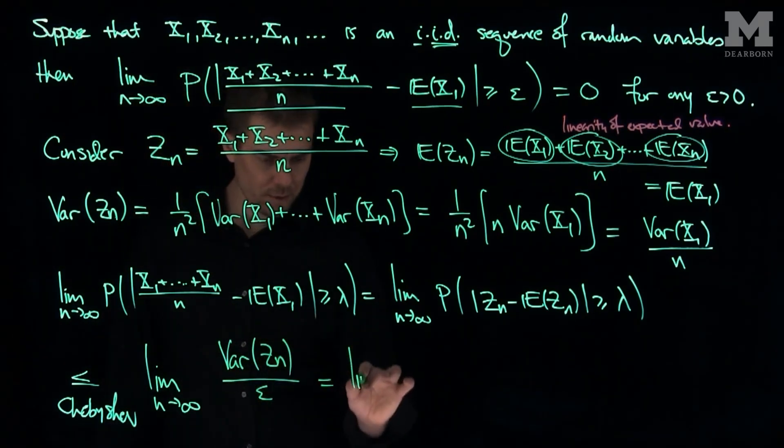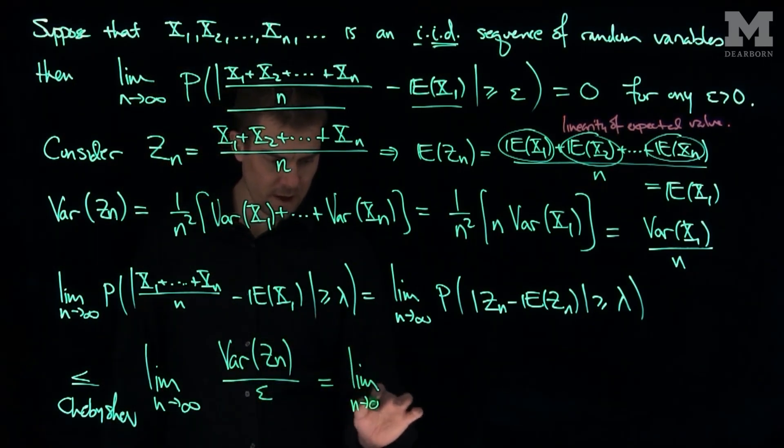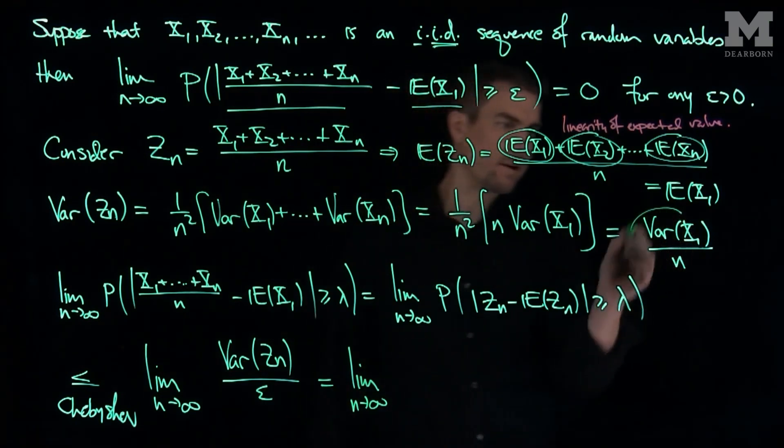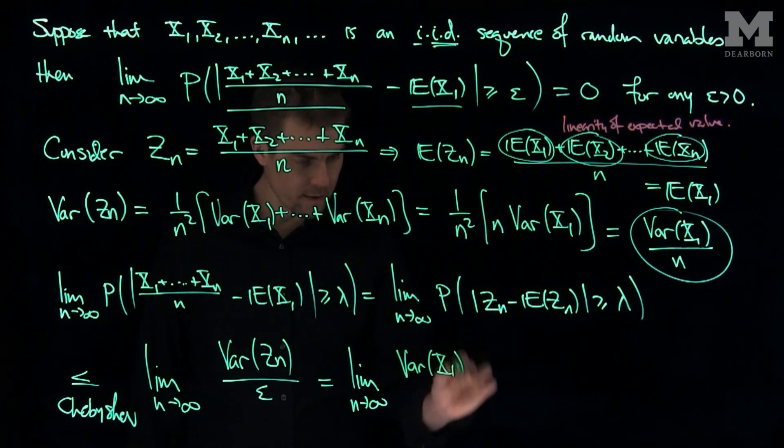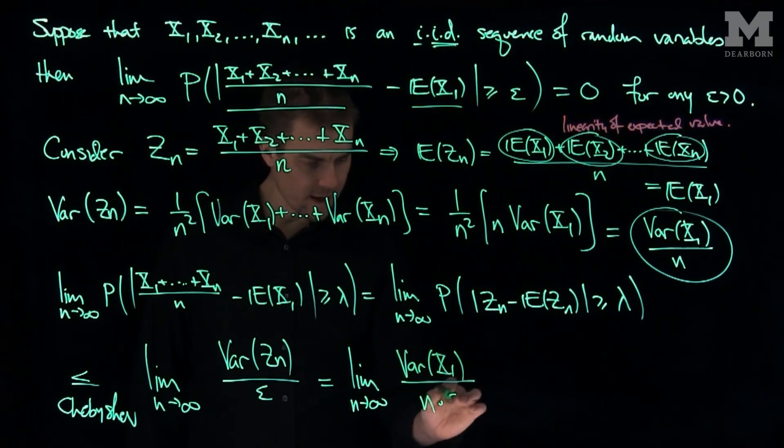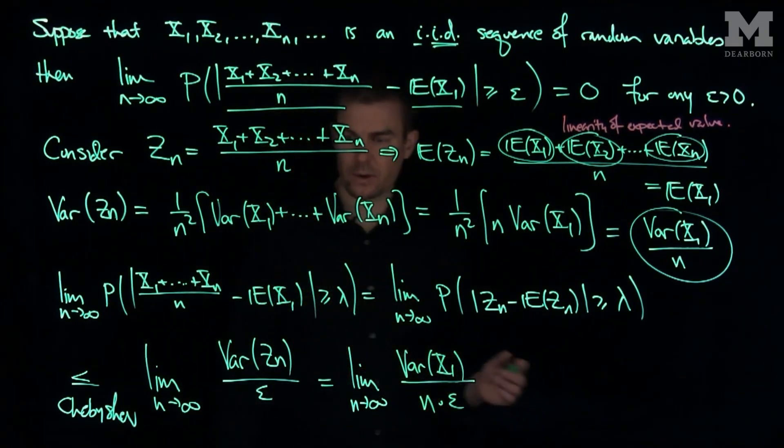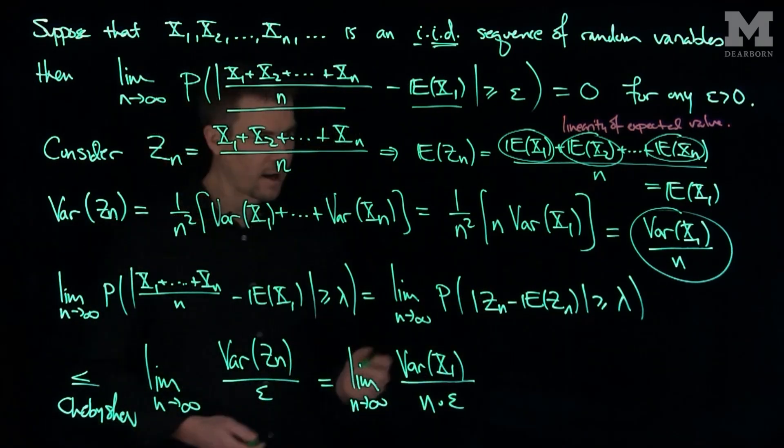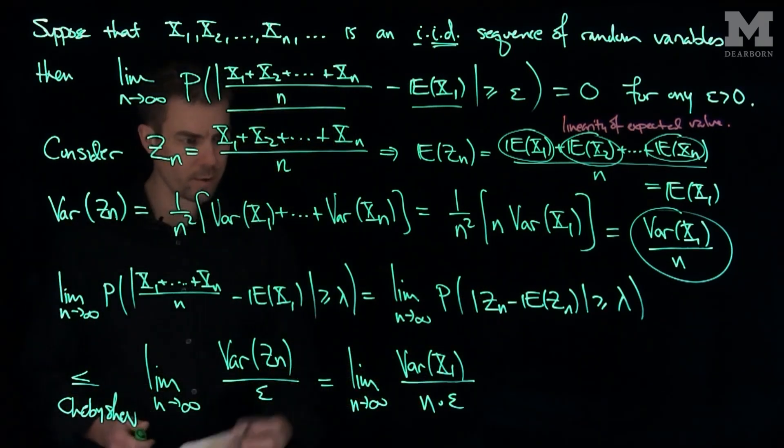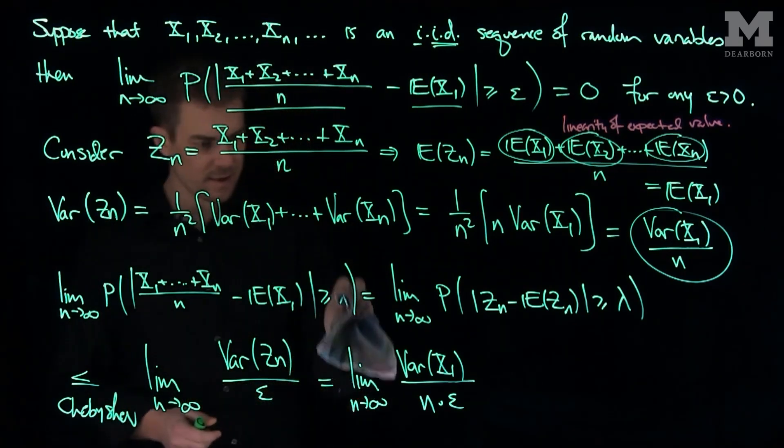But this is equal to the limit as n goes to infinity. The variance of zn is the variance of x1 over n. So this is going to be the variance of x1 over n times epsilon. And we do a lambda squared over here, so this is going to be, I put a lambda here, we really want what? We really would like an epsilon, so let's change these lambdas to epsilons.